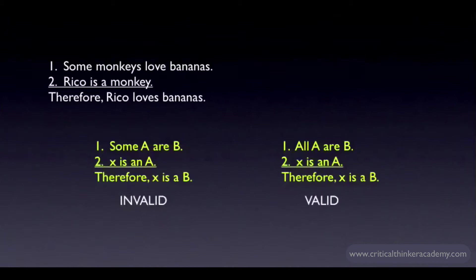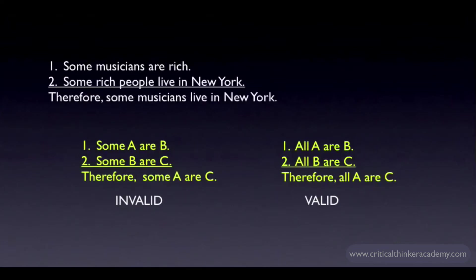I'll put it alongside the form with 'all' just to highlight the comparison. Here's another example where replacing 'all' with 'some' makes the argument invalid. Some musicians are rich. Some rich people live in New York. Therefore, some musicians live in New York. This is reasoning in a chain with 'some,' and it's invalid.